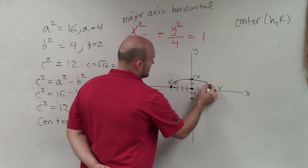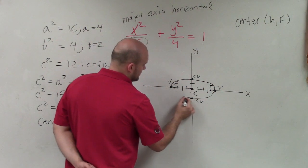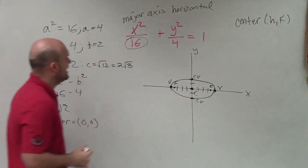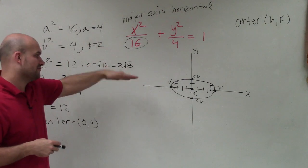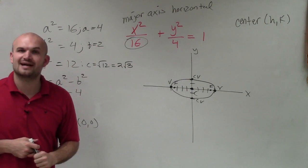Now I can go ahead and graph this. And there you go, ladies and gentlemen. That is how you graph your ellipse, as well as to label the center, your vertices, co-vertices, and foci. Thanks.